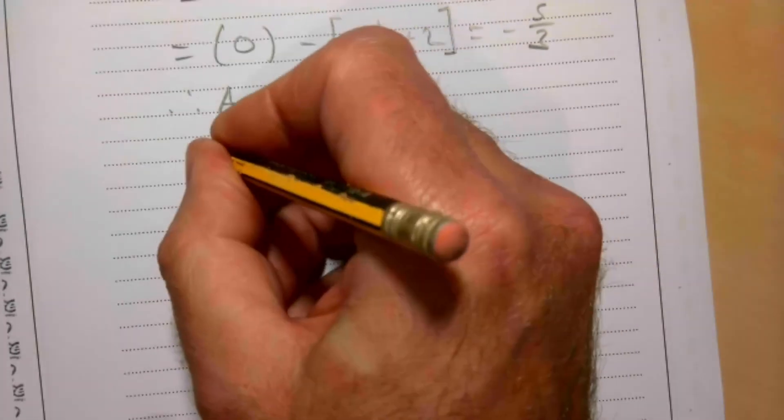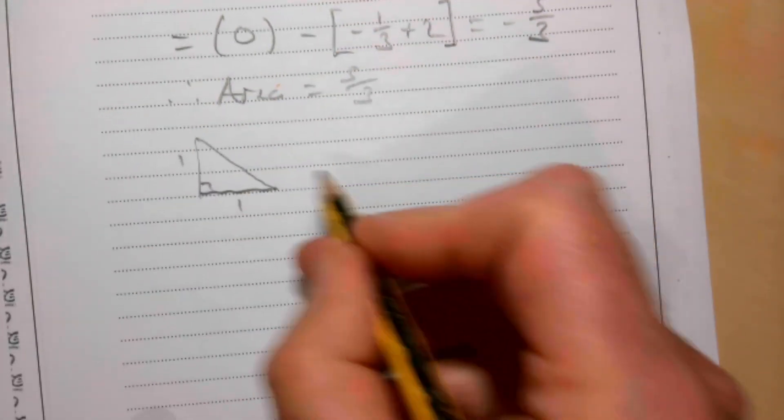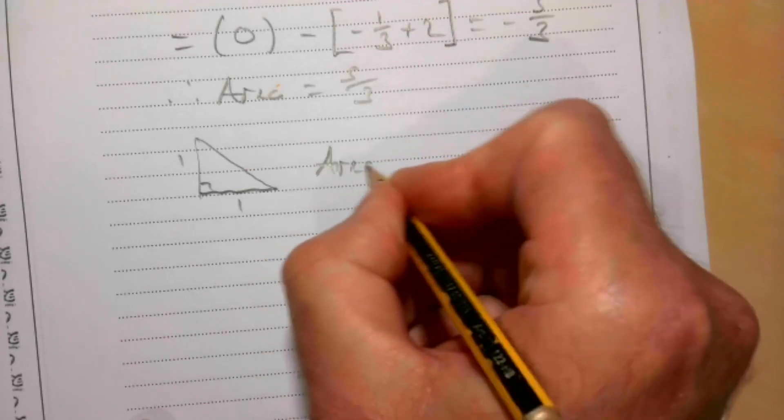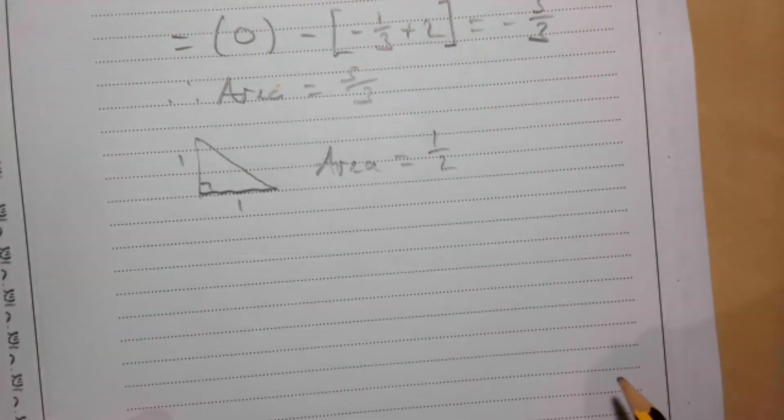The triangle looks like that. The wiggly line, that's a 1, that's a 1. So it's going to be half the base times the height. Base times height gives me 1 and half of that is going to be a half.